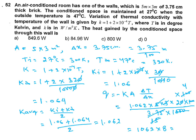The answer comes to approximately 8496 W. However, no option is exactly matching. This is likely a printing mistake — either the thickness should be 37.5 cm or the options are wrong. They may give grace marks or omit this question for evaluation, as happened in 2015 with around 3 questions. You can cross-check: the calculation procedure gives 8496 W.